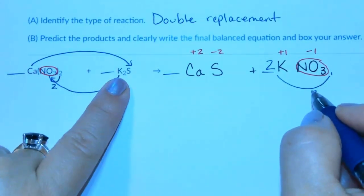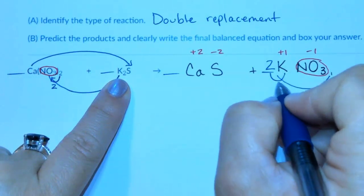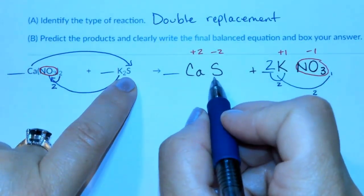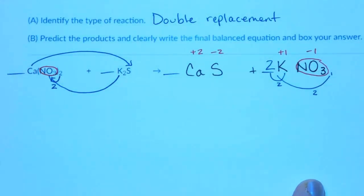Now we have 2 potassium on the left. This gives me 2 potassium on the right. And then I have 1 sulfur on the left, 1 sulfur on the right. So this is now a balanced equation.